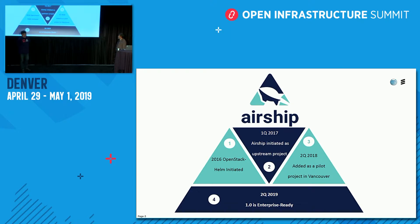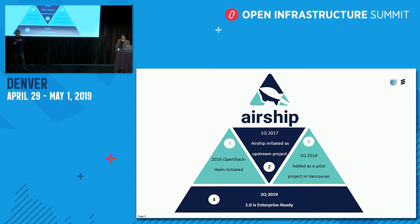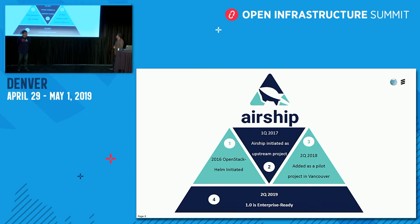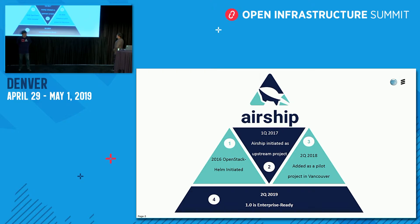The history of Airship: in the first step, Airship started as OpenStack Helm projects, which were used as a core part of Airship in order to deploy chart-based software artifacts and components. After OpenStack itself was running as chart-based applications, we started to look at the declarative platform and initiated Airship as an upstream community on GitHub — that was in the first quarter of 2017.